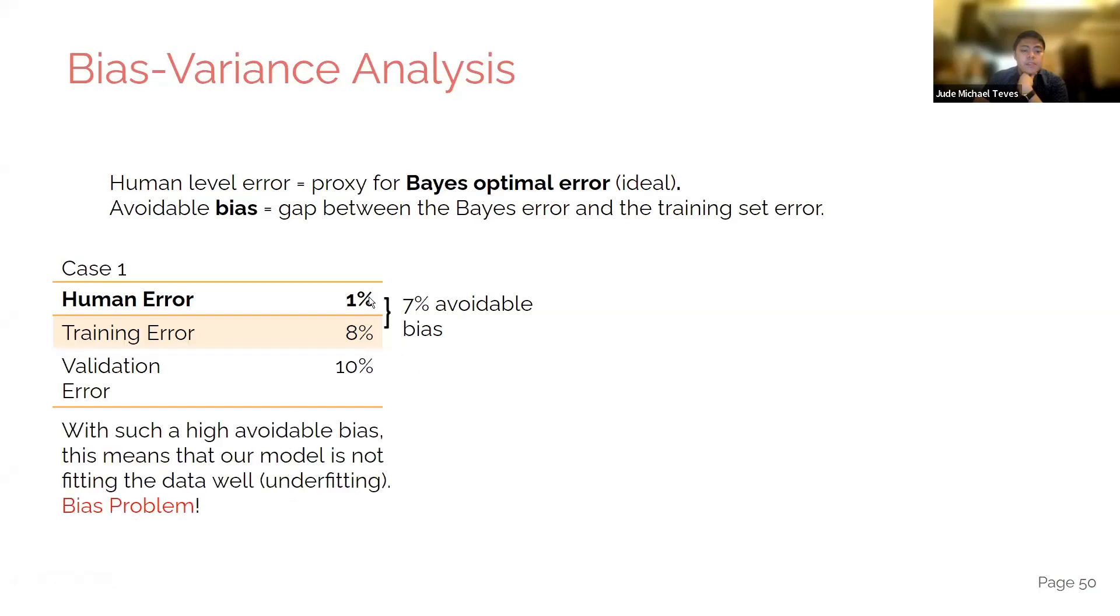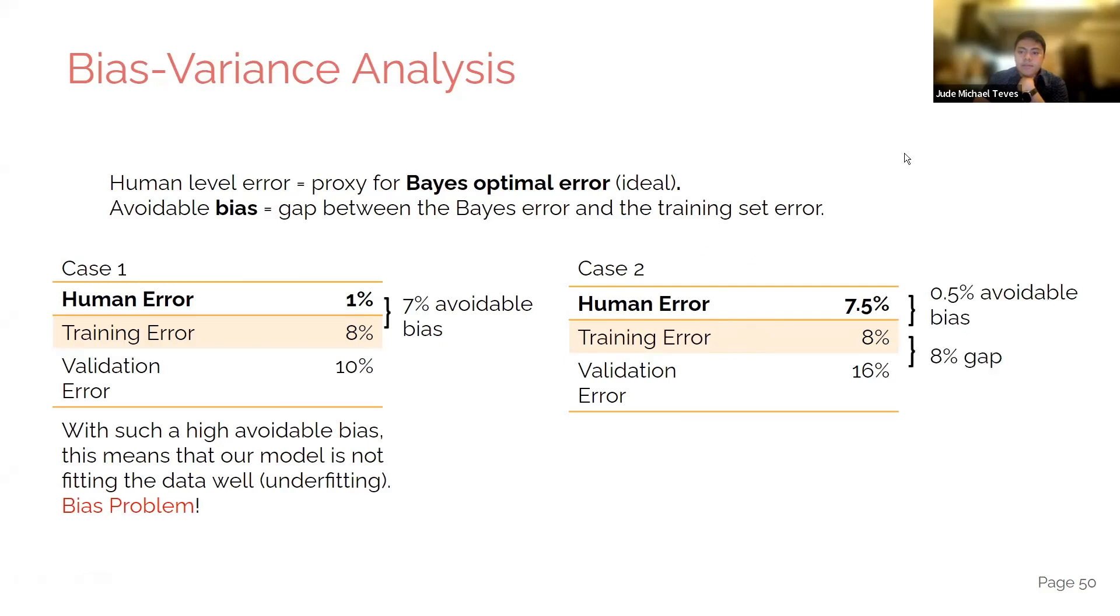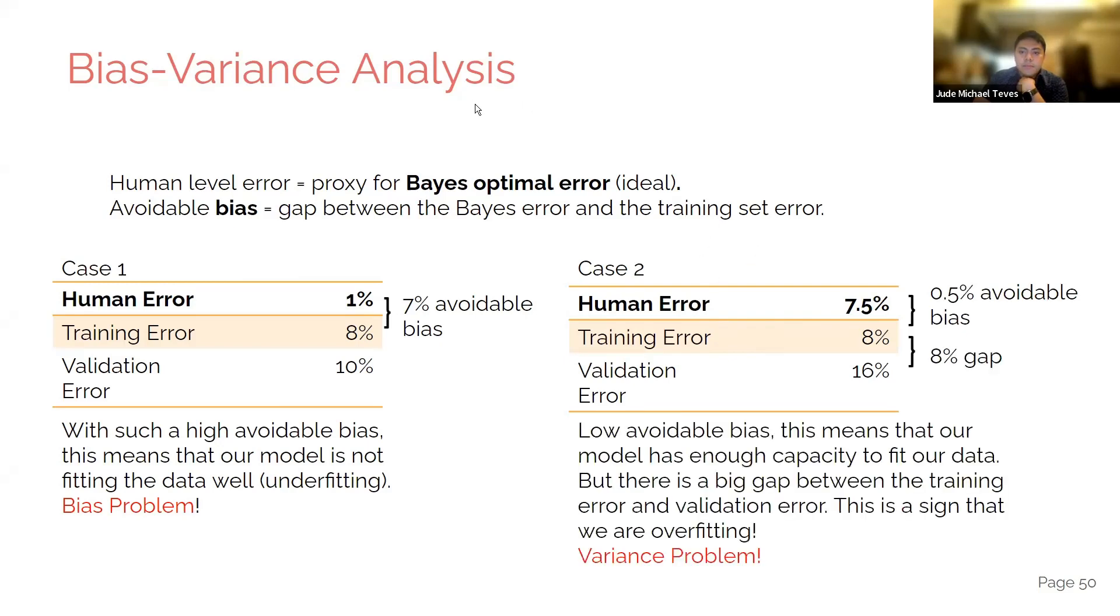Case 2. Low bias, but high variance. So that means you could still improve your model. That's usually the thing. You could do something about this. This gap. The gap between the train and validation error. You'd normally do something about it.